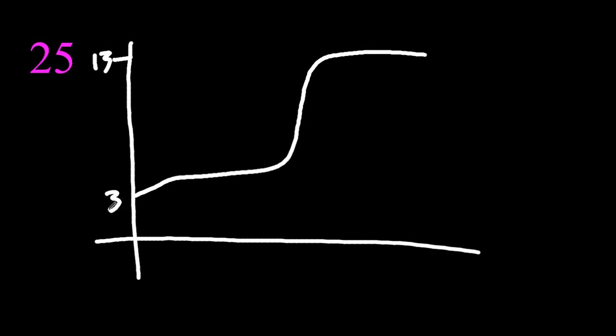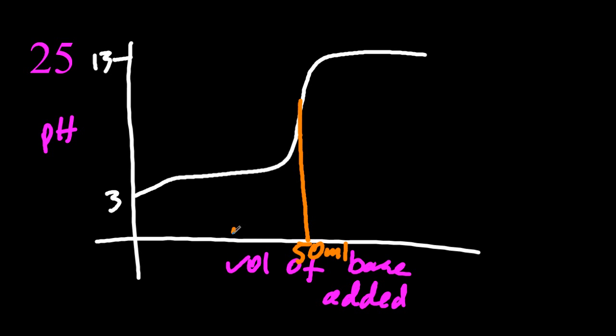Here's a titration curve. Half equivalence isn't on the syllabus, but that doesn't stop them asking about it. At half equivalence, the pKa of the weak acid can be found on that axis.